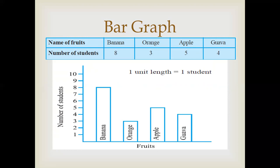Here the first bar is banana. And its length is 8. The length of every bar can be different or can be same. For orange, the length is 3. And so on. We will draw the other bars. Here we have taken 1 unit length equal to 1 student. Scale can be of your choice.